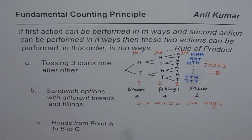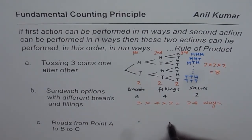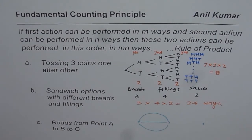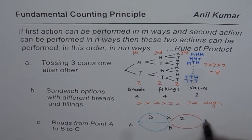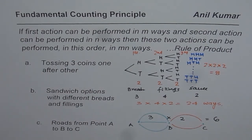This is a very important principle, especially when you are doing probability questions and need to find the total number of options. Let me take another example: we have to go from point A to B to C. From A to B, let's say we could go in three different ways, and from B to C, let's say we could go in two ways. In how many ways can you go from A to B to C? Since we have three ways and two ways, three times two gives you six options.